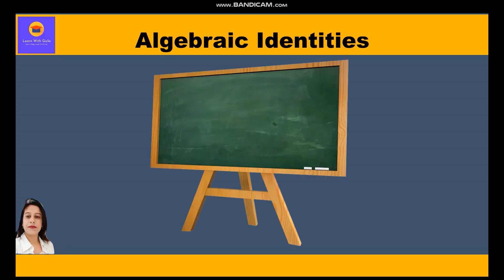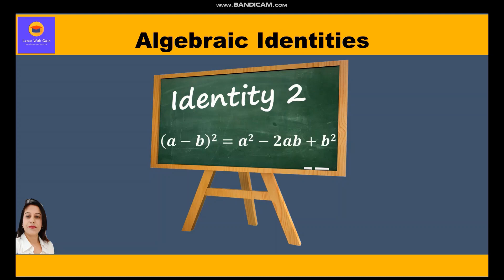Hi everyone. In this video on algebraic identities, we are going to take a few questions related to identity 2. Identity 2 is: (a minus b) whole square is equal to a squared minus 2ab plus b squared.